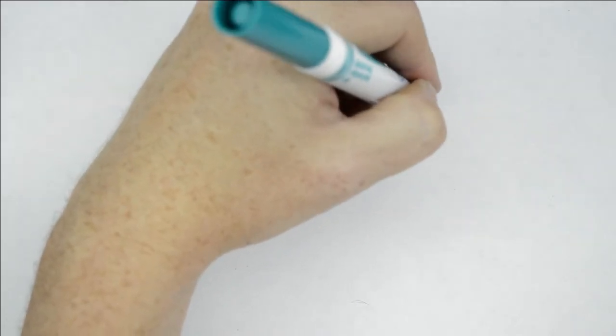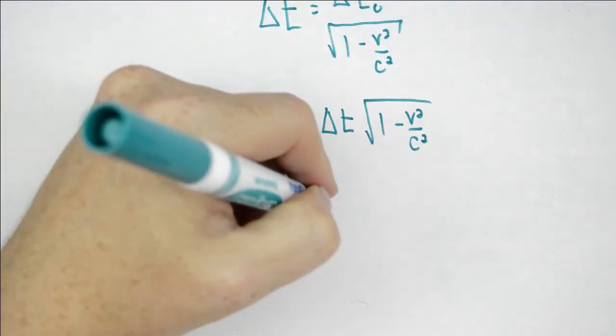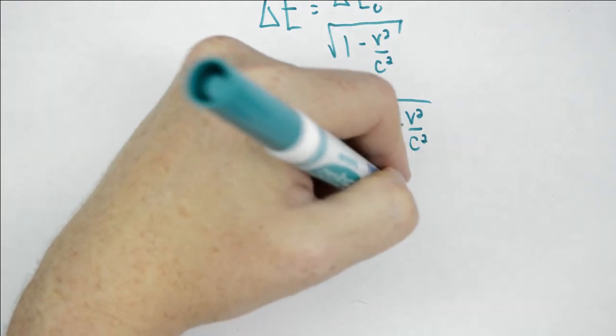What we have is that the muon measures what we call the proper time, and the scientist measures the dilated time. That is, the scientist's time will be longer than the muon's time.